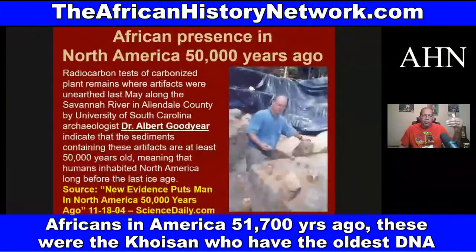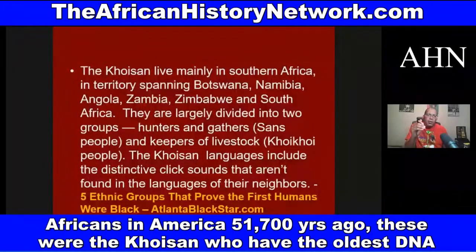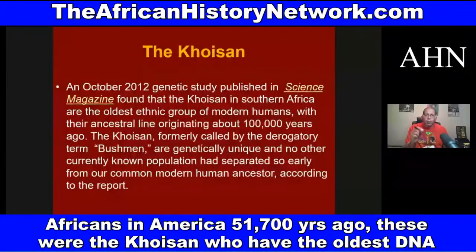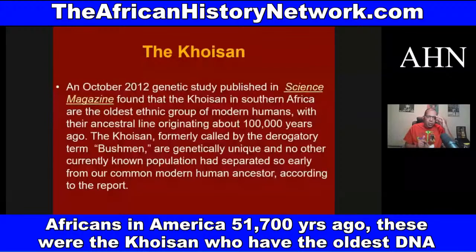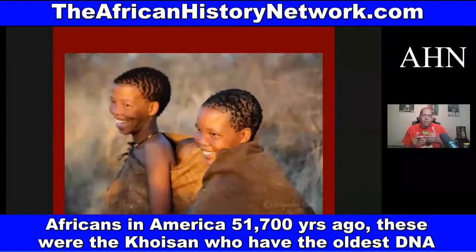These were the Khoisan, who have the oldest DNA on the planet. They come from southern Africa. A 2012 study from Science magazine found that the Khoisan of southern Africa are the oldest ethnic group of modern humans, with their ancestral line originating about 100,000 years ago. The Khoisan — formerly called by the derogatory term 'Bushmen' — are genetically unique, and no other currently known population had separated so early from our common modern human ancestor.